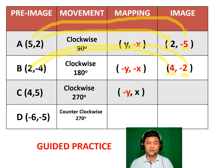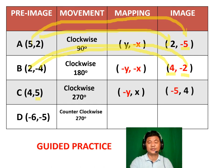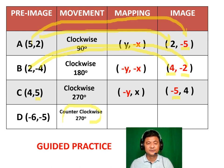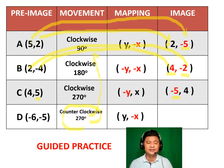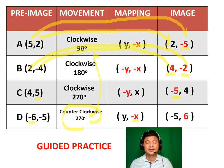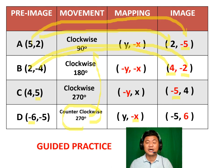The next one — 270-degree clockwise. Write down the formula: (negative Y, X). Switching, but Y will be a negative. So let's write it down: (negative 5, 4). Now 270-degree counterclockwise — remember, it's the same as 90-degree clockwise. So let's write down the same formula and switch places: negative 5 goes first, but the original X becomes a negative — which is a negative of a negative, which is a positive.